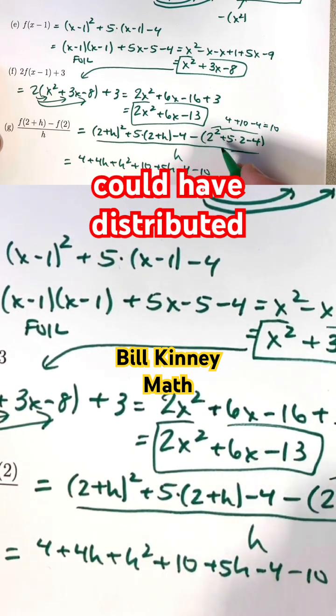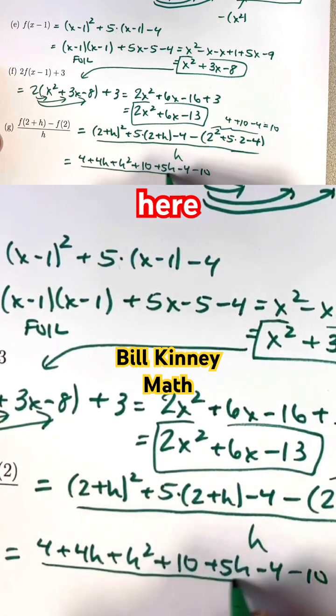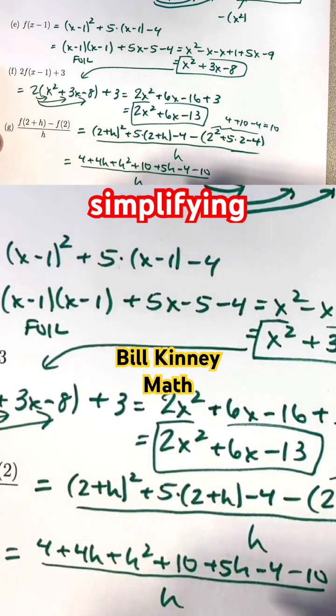I also could have distributed the minus sign through the parentheses here. All divided by h. Continue simplifying.